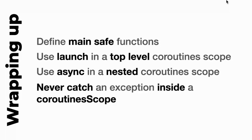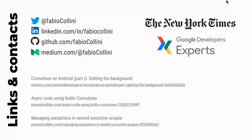Here are some links. My name is Fabio Collini, I'm an Android developer at The New York Times based in Italy, and a Google Developer Expert for Android and Kotlin. There's a link written by Google about main safety and two articles I wrote about coroutines.